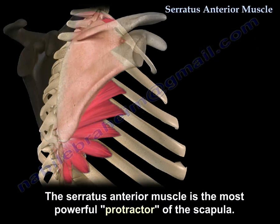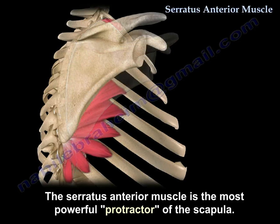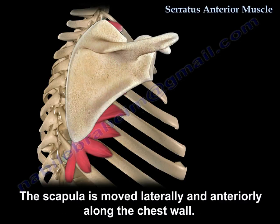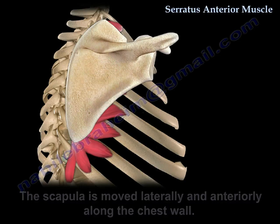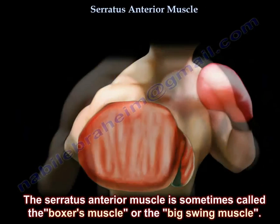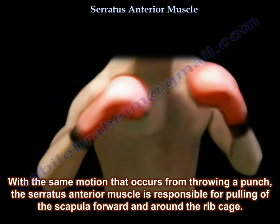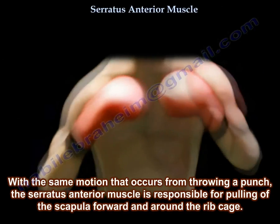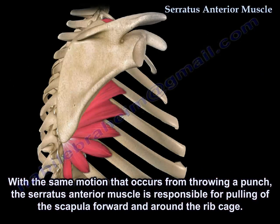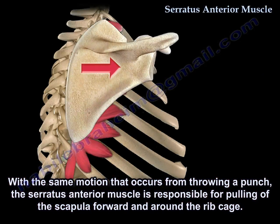The serratus anterior muscle is the most powerful protractor of the scapula. The scapula is moved laterally and anteriorly along the chest wall. The muscle is sometimes called the boxer's muscle or the big swing muscle, as it is responsible for pulling the scapula forward and around the rib cage — the same motion that occurs when throwing a punch.